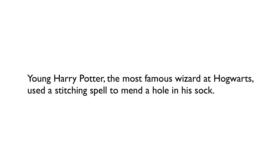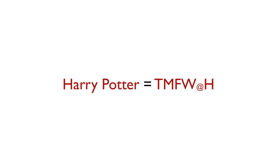This is a pretty silly sentence, but I want you to take a look at this part: 'the most famous wizard at Hogwarts.' What is it doing here? It's pretty clear that it's renaming what young Harry Potter is — giving us more information about him. It's essentially telling us that Harry Potter is the most famous wizard at Hogwarts. Both phrases are referring to the same referent, Harry Potter.